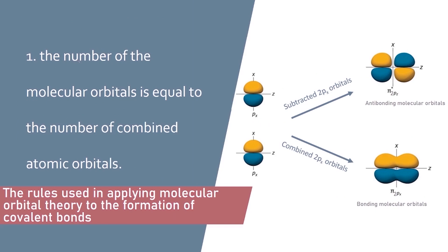The first rule states that the number of molecular orbitals equals the number of the combined atomic orbitals. Here you can see that two Px atomic orbitals are subtracted and combined. Adding the two Px atomic orbitals results in the spread of the Px molecular orbitals over the two atoms, while subtracting the two atomic orbitals results in two anti-bonding molecular orbitals. In bonding, the two Px molecular orbitals are spread over all atoms and aligned to overlap properly. The number of molecular orbitals equals the number of atomic orbitals.